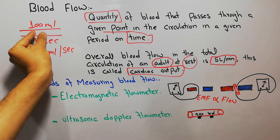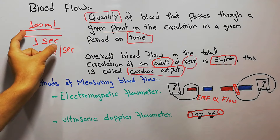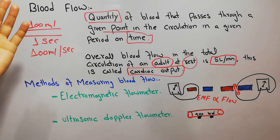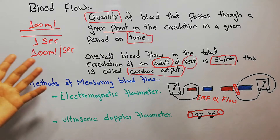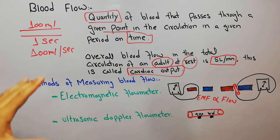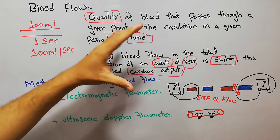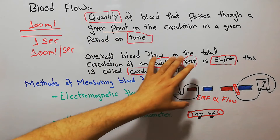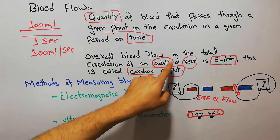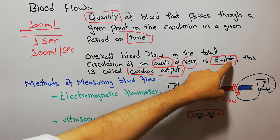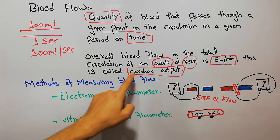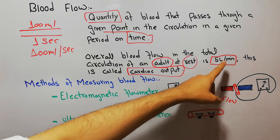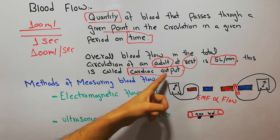If 100 ml is passing through a given point in one second it's 100 ml per second. If 50 ml is passing in one second it's 50 ml per second, and if 200 ml is passing in one second it's 200 ml per second. Overall, the blood flow in the total circulation of an adult at rest is 5 liters per minute, and this is called cardiac output.